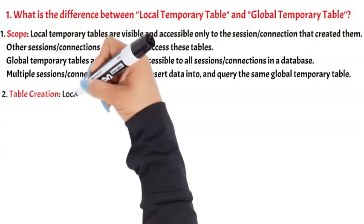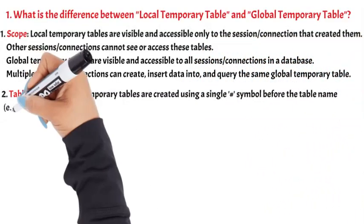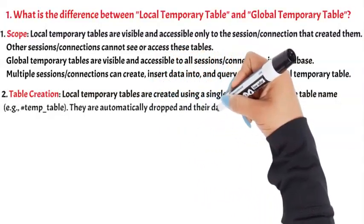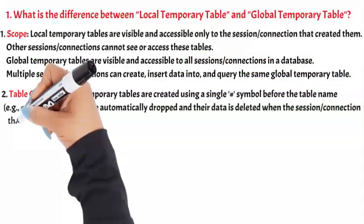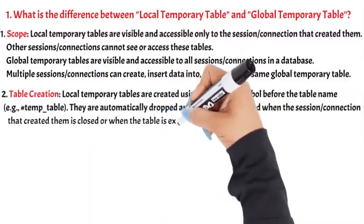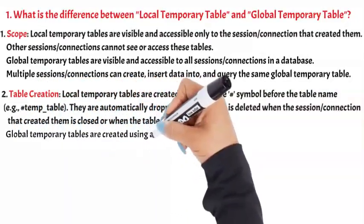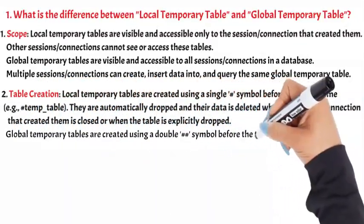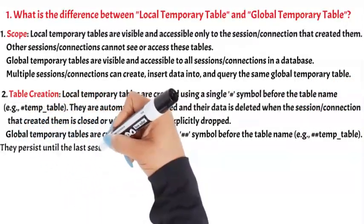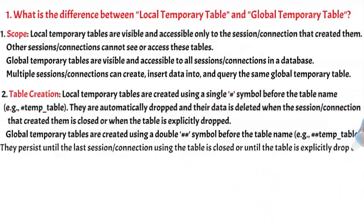2. Table creation. Local temporary tables are created using a single hash symbol before the table name, e.g., #temp_table. They are automatically dropped and their data is deleted when the session/connection that created them is closed or when the table is explicitly dropped. Global temporary tables are created using a double hash symbol before the table name, e.g., ##temp_table. They persist until the last session/connection using the table is closed or until the table is explicitly dropped.